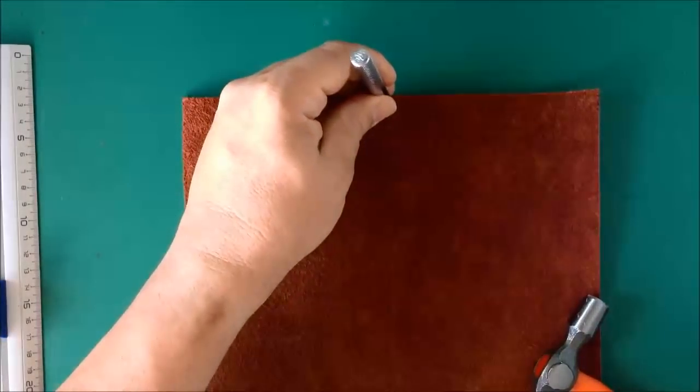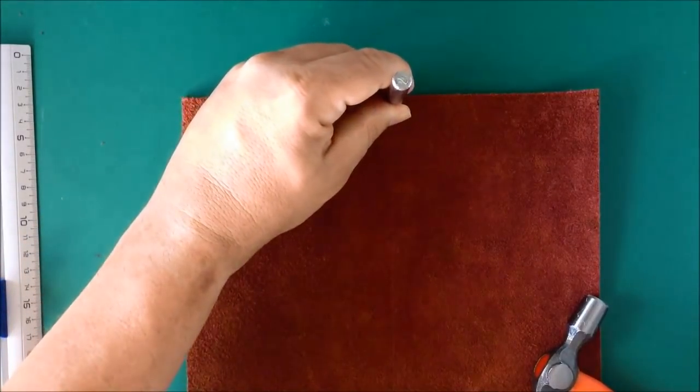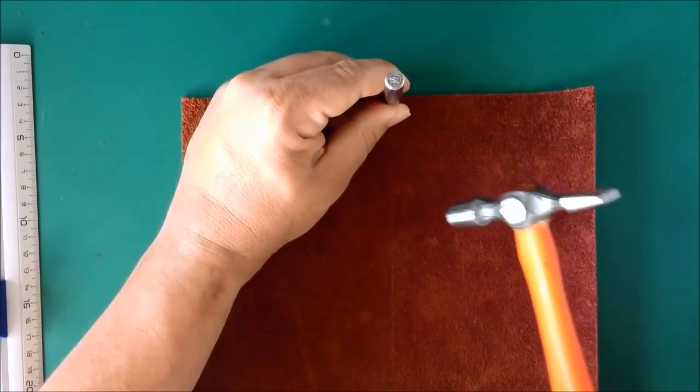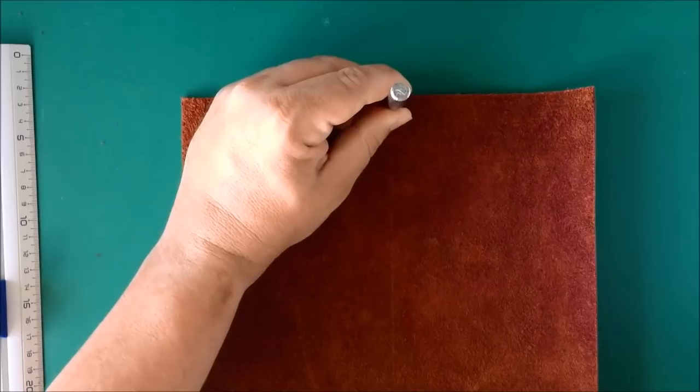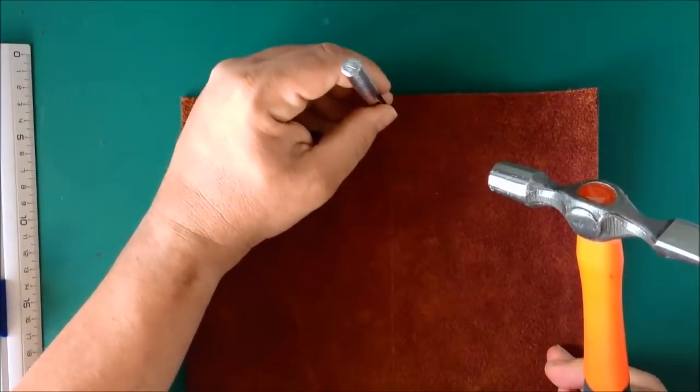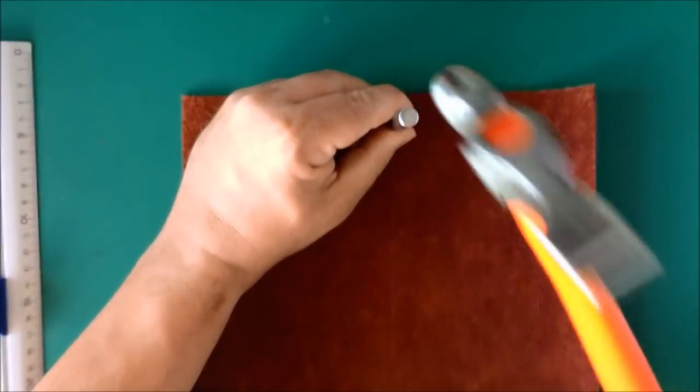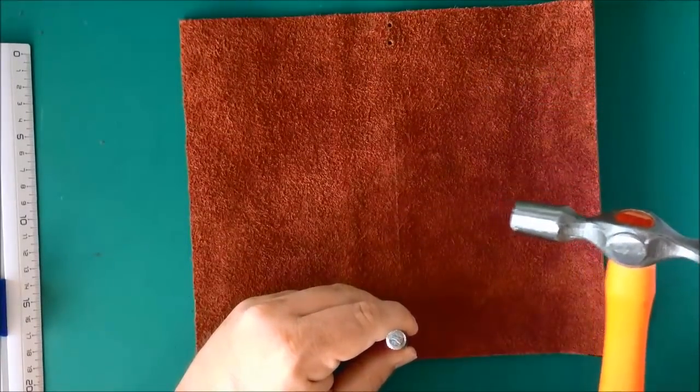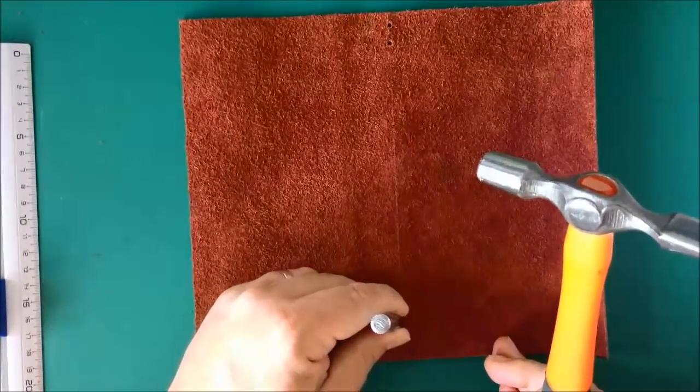So first let's do the top and bottom. So getting about half a centimeter in and it's really important that you do this punch from the inside to the out. Because these holes are somewhat conical so you want the smaller edge of the hole to be on the outside of the piece so that it's less visible. So a bit of a sound tap. There's one hole. Another one maybe a centimeter lower. Okay there it is. And then the same thing at the bottom of the piece. And then again a little higher.